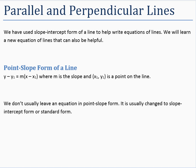Point-slope form is mostly useful to write equations of lines. As we saw in the last lesson, we can just use slope-intercept form, but point-slope form is set up nicely if you know the slope of the line and a point that it goes through. You can just plug it right into that form and then usually change it into another form, whether it's slope-intercept or standard form. We don't usually leave an equation in point-slope form.